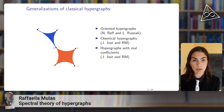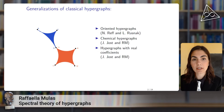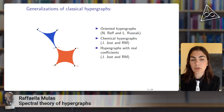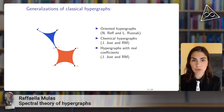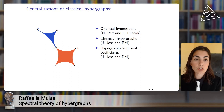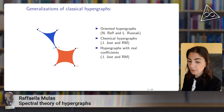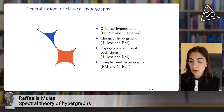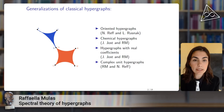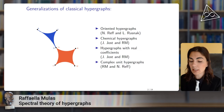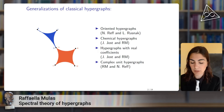Recently we also introduced hypergraphs with real coefficients, in which a vertex-edge incidence is given a real coefficient. This allows for the modeling of the probabilities that the vertices belong to the edges, or for modeling stoichiometric coefficients in chemistry. I also introduced the complex unit hypergraphs, which are similar to the hypergraphs with real coefficients but instead have coefficients from the complex unit circle.